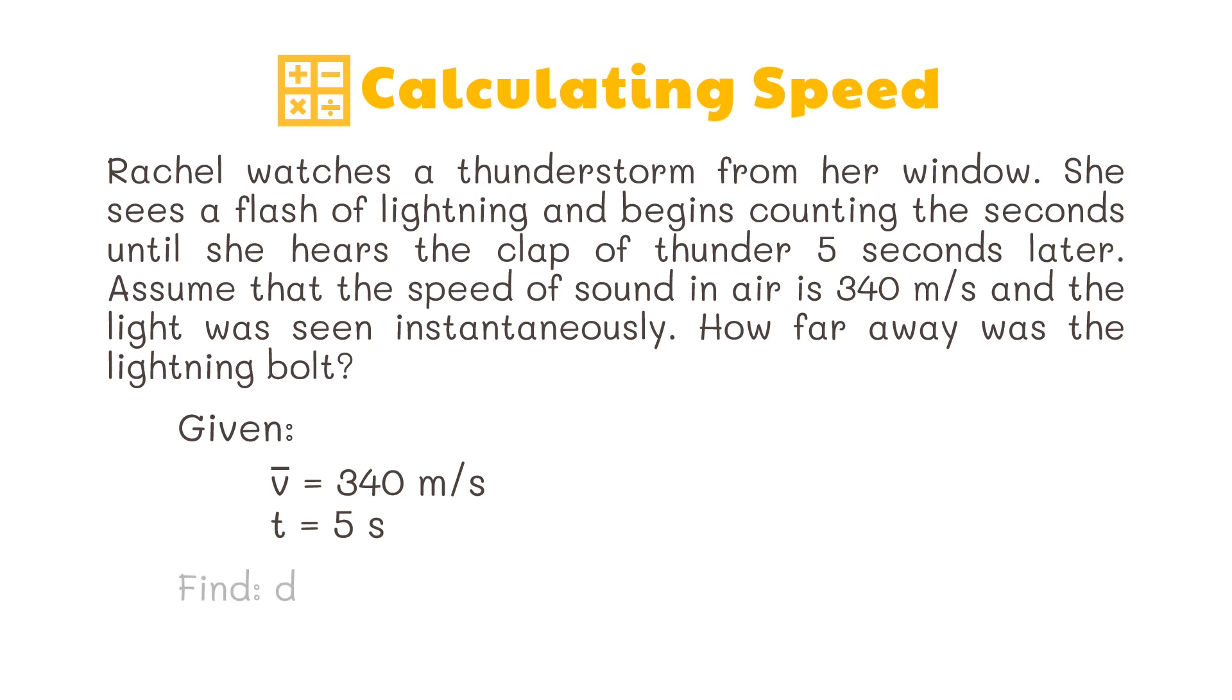To get the distance, we can derive the formula from the formula for speed, which is speed equals distance over time. We can then get the formula for distance, which is speed multiplied by time. The given speed is 340 meters per second multiplied by the given time, which is 5 seconds. We can cancel out common units. So the lightning bolt was 1700 meters away from Rachel's location.